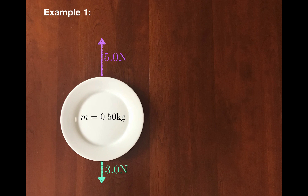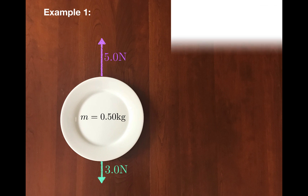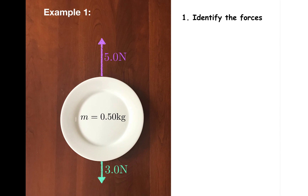Let's say that a plate is sitting on a table and there are two forces acting on it in opposite directions. If the mass of the plate is 0.50 kilograms, what is the acceleration of the plate? In this example, the first step has been done. You'll see lots of examples in upcoming videos in which the diagram needs to be generated, but in this video I'm just going to give the diagram so that I can focus on showing how the F net equals ma part works. The next two steps are to apply Newton's second law and to solve.